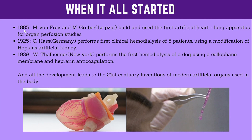In 1925, G. Haas from Germany performed the first clinical hemodialysis of five patients using a modification of Hopkins' artificial kidney. Hopkins made the artificial kidney and G. Haas did some modification to perform his first clinical hemodialysis. Hemodialysis means that if a person is having kidney failure, this process filters the blood and keeps the patient alive with good blood.